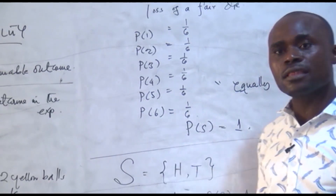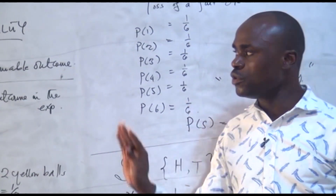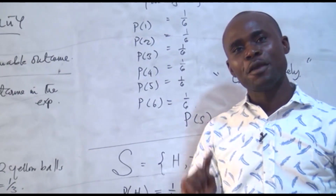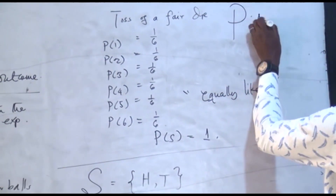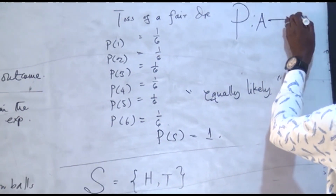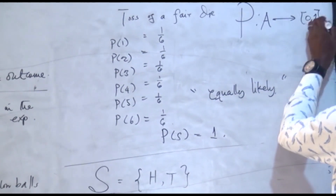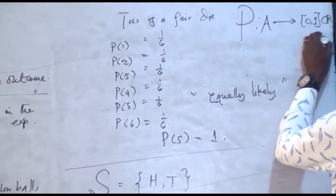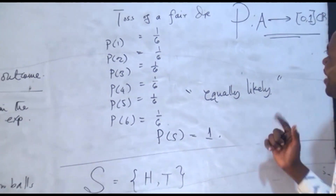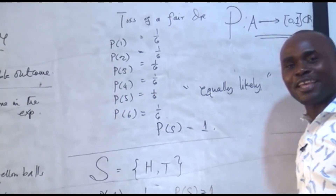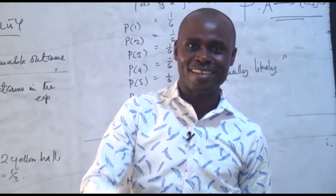In the next video, I'm going to be solving just two questions to illustrate this probability. Don't forget that the probability of an event is the function that maps an event to a value — that is the mathematical definition of the probability of an event. Thank you very much, and stay tuned for the next video.